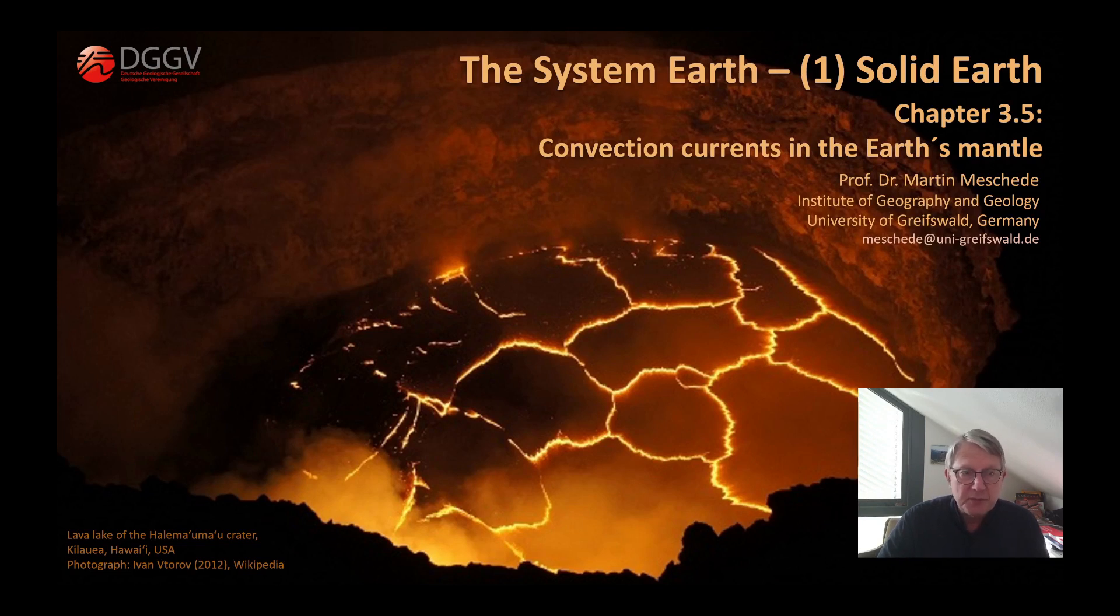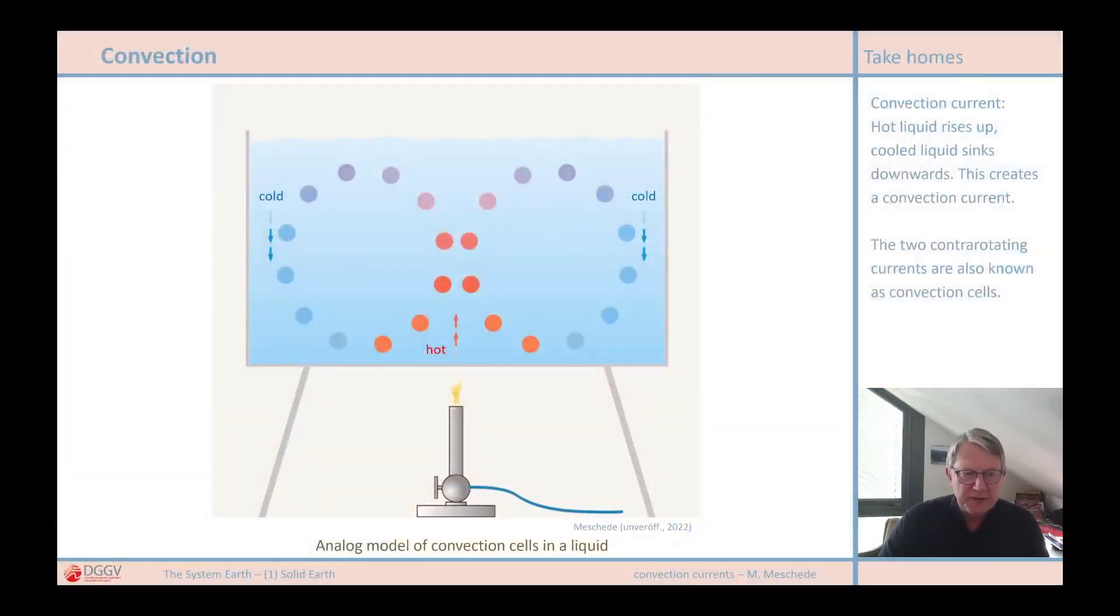This phenomenon can be observed in many places. For example, we all know that warm air rises and cold air falls down. It can also be demonstrated in a very simple experiment. If you heat water in a pot at one point, for example with a Bunsen burner, as shown in the figure here, heat is supplied by the flame and the heating causes the water to rise at this point because it becomes lighter. It cools on the surface and sinks back down the sides of the pot. This creates a circular flow called convection. The water moves in a convection current.